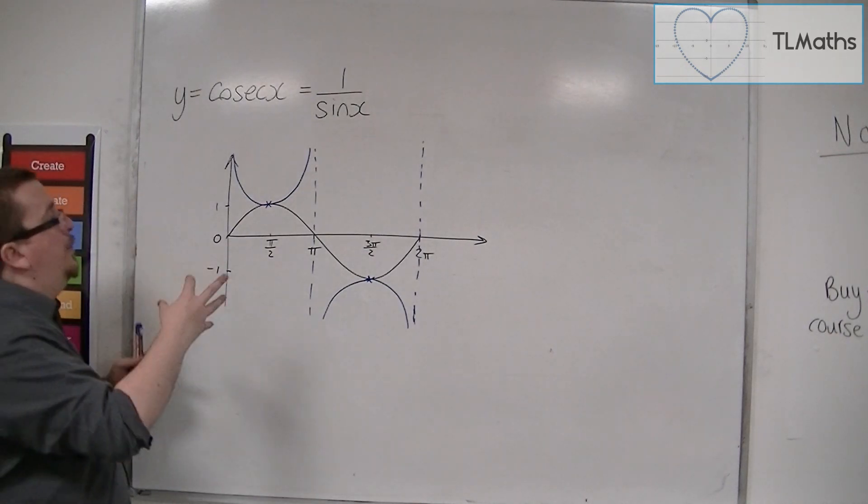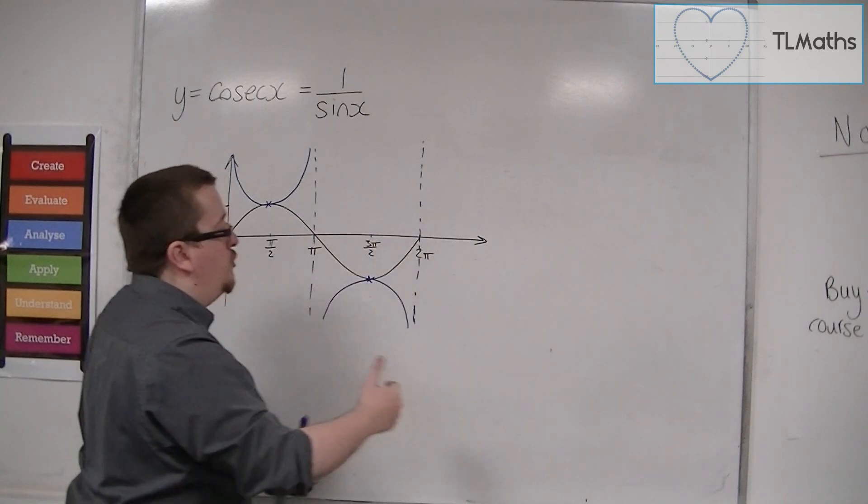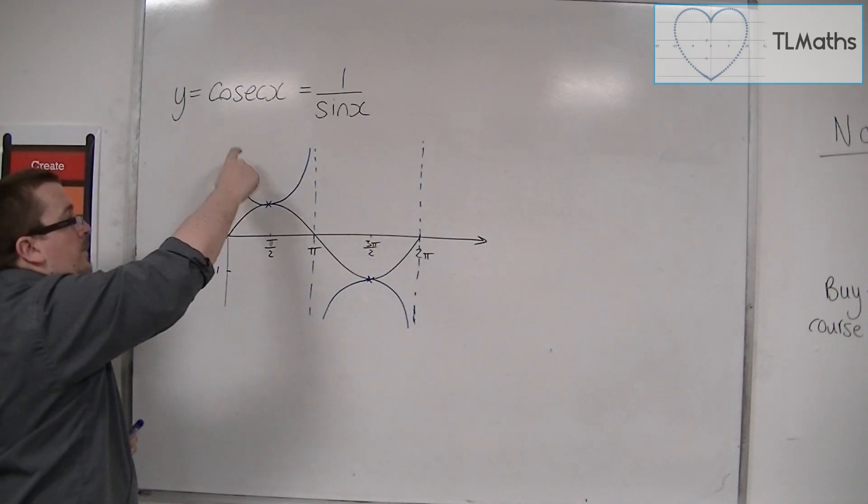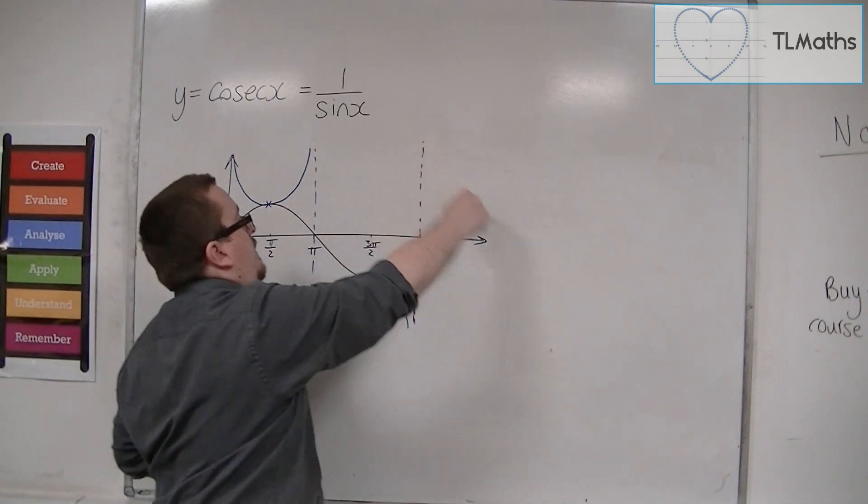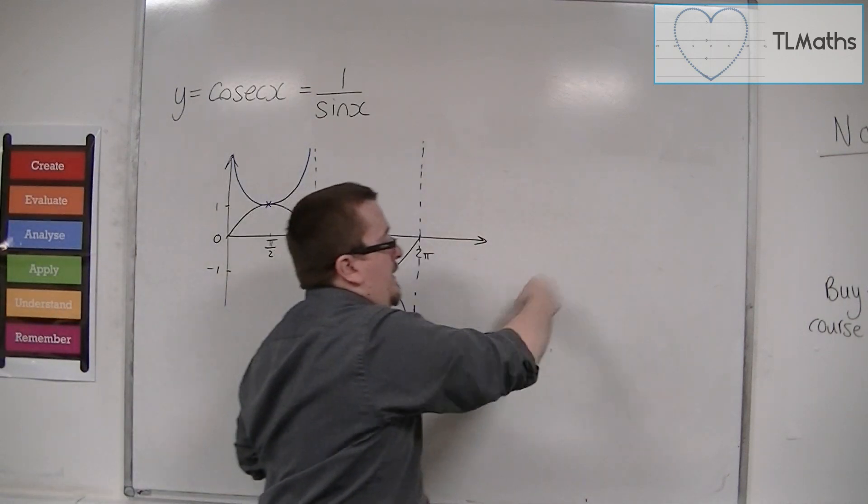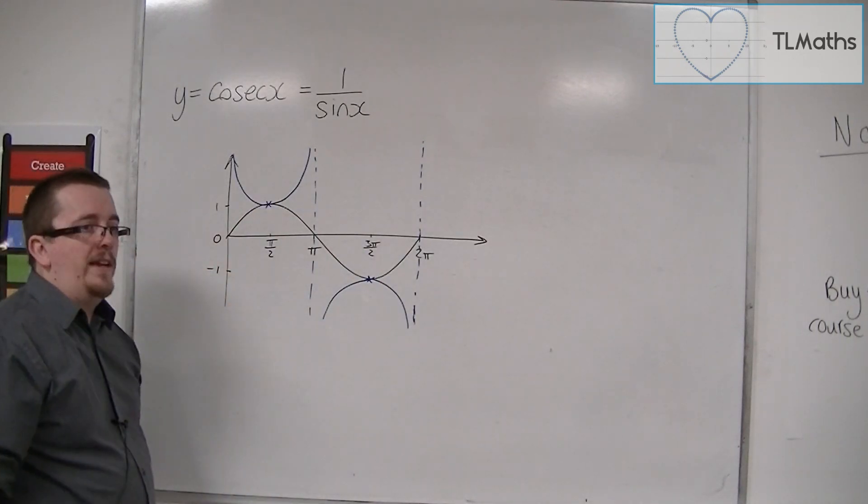And so Cosec x is split up into these sections where the curve is kind of like a U shape, then a downwards U shape, then an up U shape, and then down and so on and so forth. So this is what Cosec looks like.